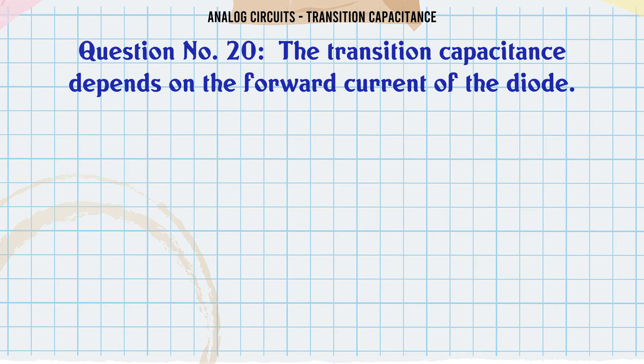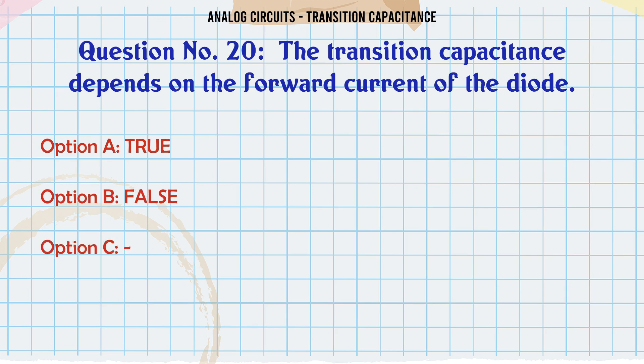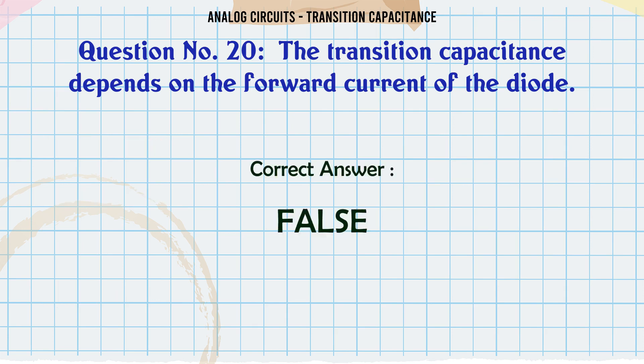The transition capacitance depends on the forward current of the diode. A: True, B: False. The correct answer is False.